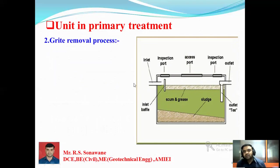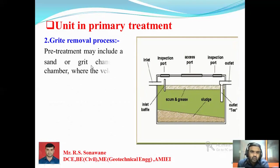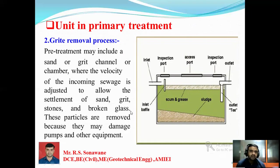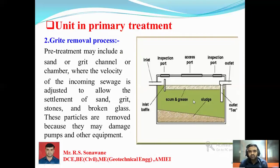The next unit in primary treatment is the grit chamber. This shows the inlet and outlet of the grit chamber with an inspection port, access port, outlet port, scum bridge, and sludge section where grit settles. Pre-treatment includes a sand or grit channel or chamber where the velocity of incoming sewage is reduced to allow settlement of sand, wood, stone, and broken glass — these particles are removed because they may damage pumps or other equipment. Floating material is removed by screening, but remaining fine silt cannot be removed by screening alone, so the grit chamber allows fine silt to settle down.